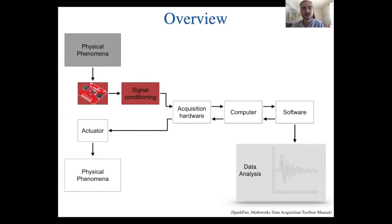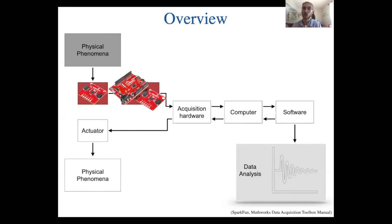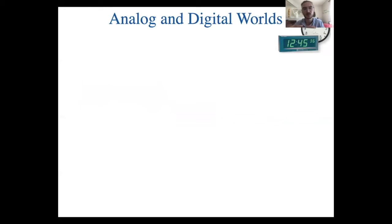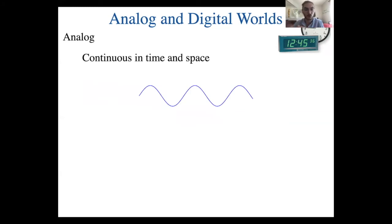Let's now talk about how the signal gets from the sensor to the computer. We need to capture the electrical signal and translate it into language that the computer can read — this is what the acquisition hardware is for. Up to this point we were usually talking about an analog signal. Analog means that it is continuous in time and space, but to store data on the computer we need the information to be digitized, which means we need it in discrete values. In some cases a sensor already provides digitized information — some accelerometers, for example, already give us the actual g-forces measured rather than an analog electrical signal.